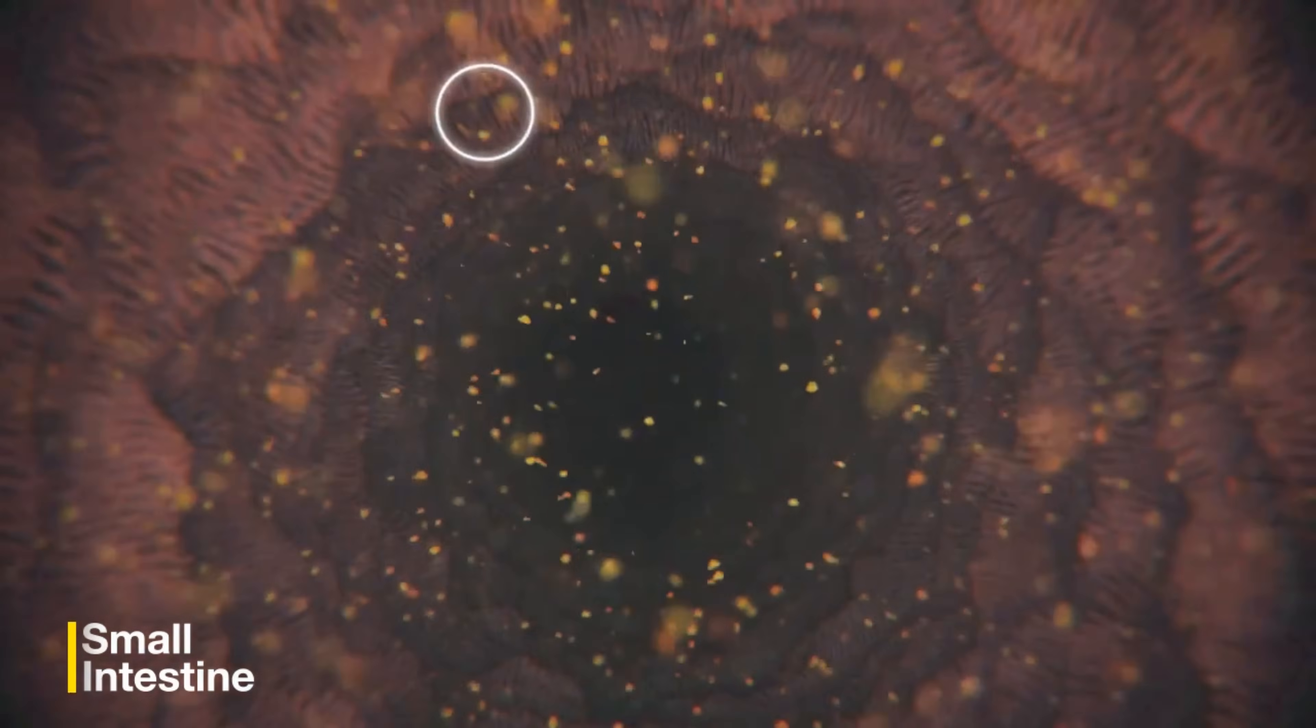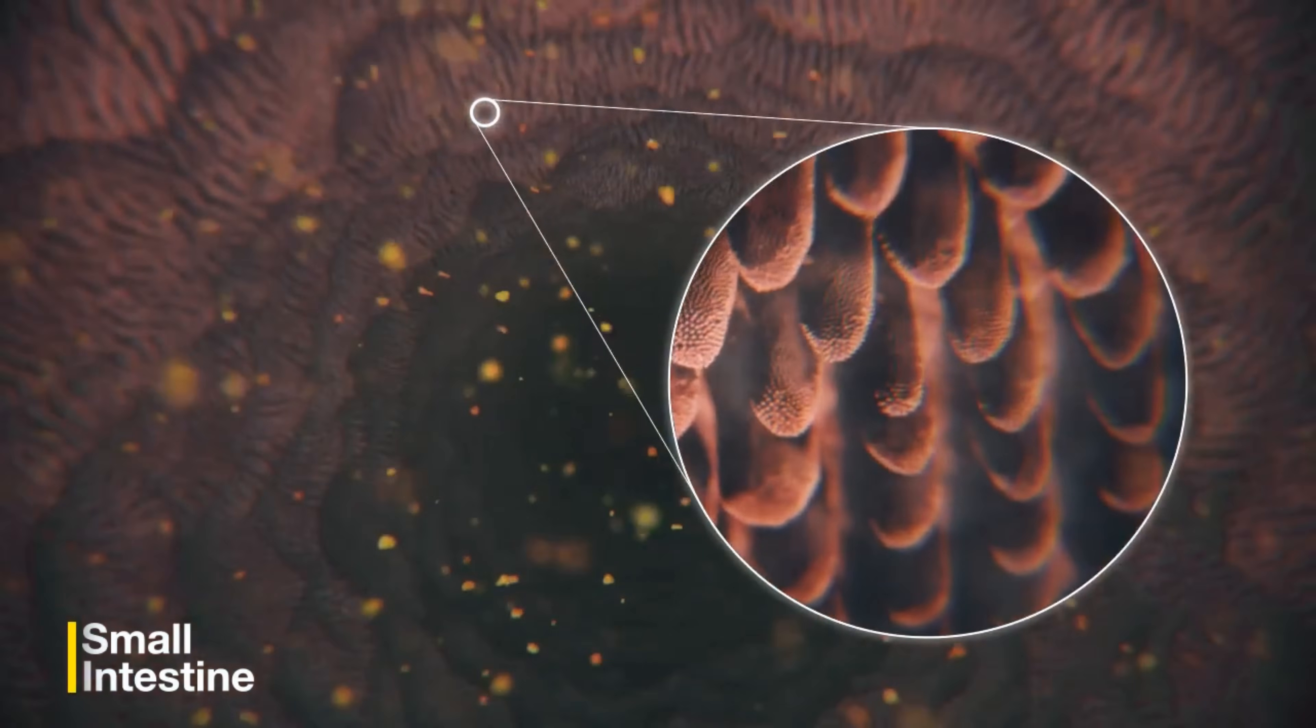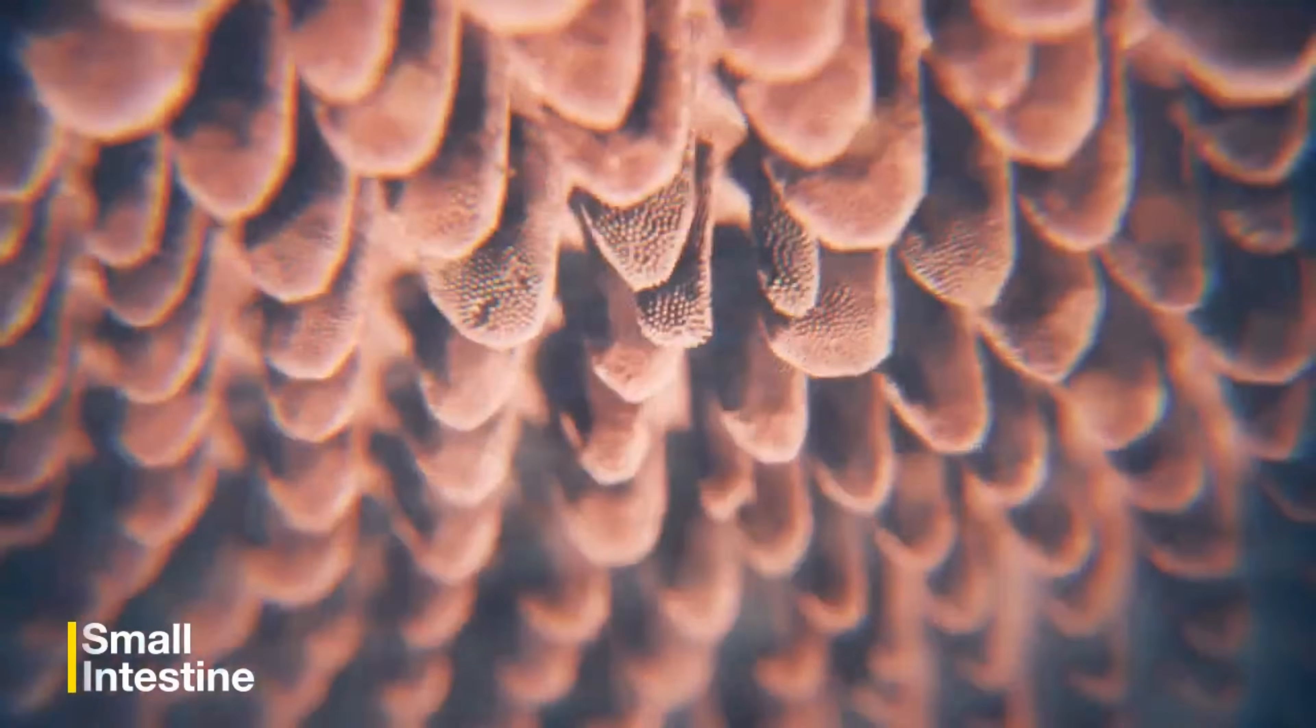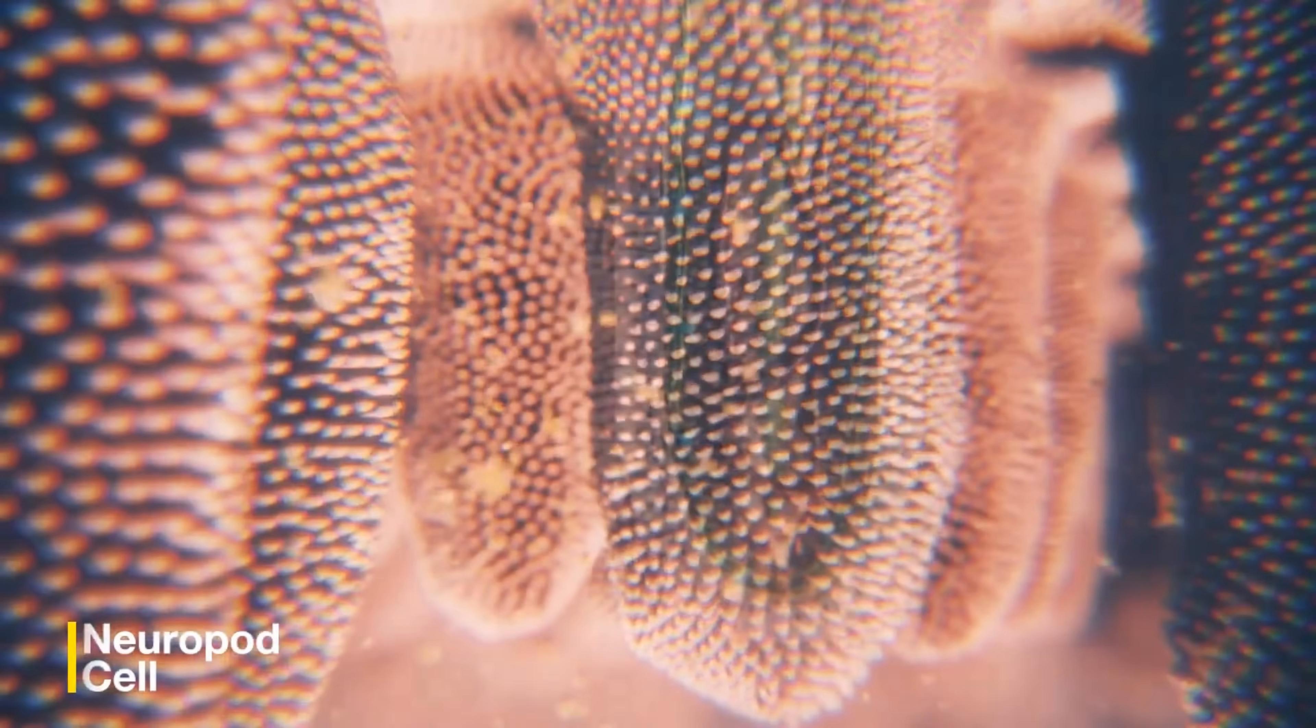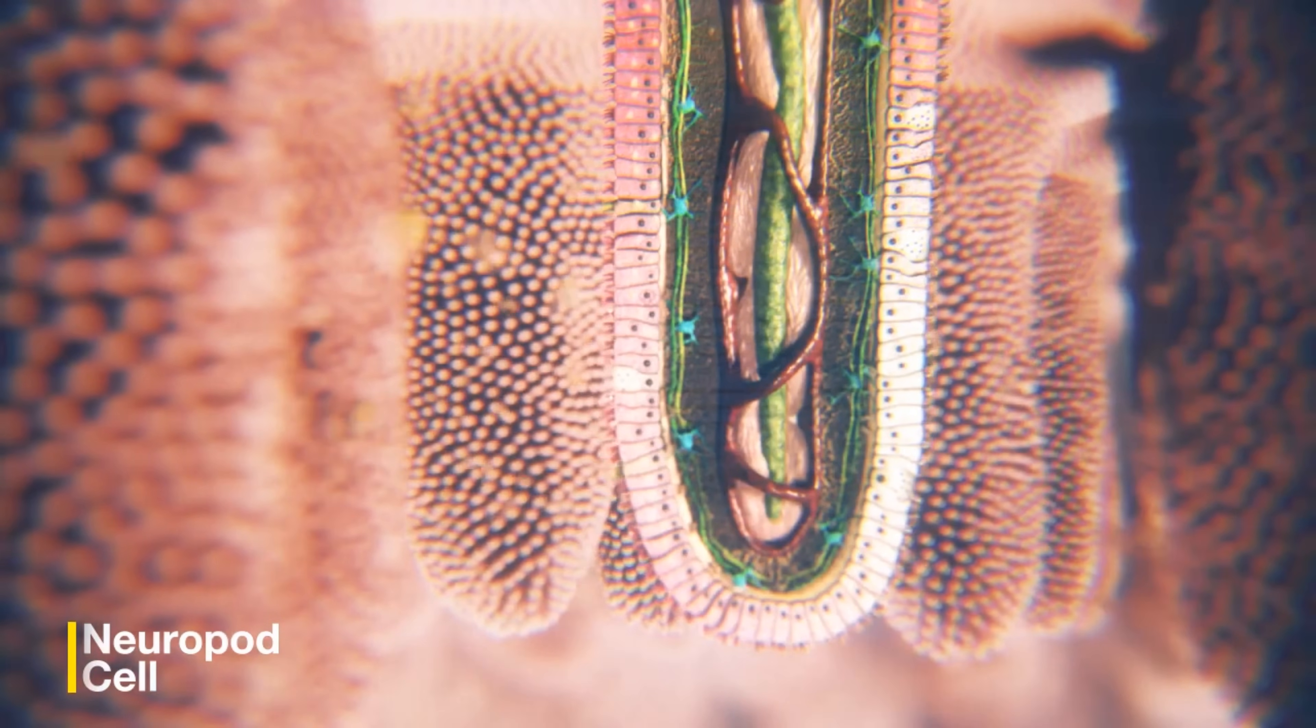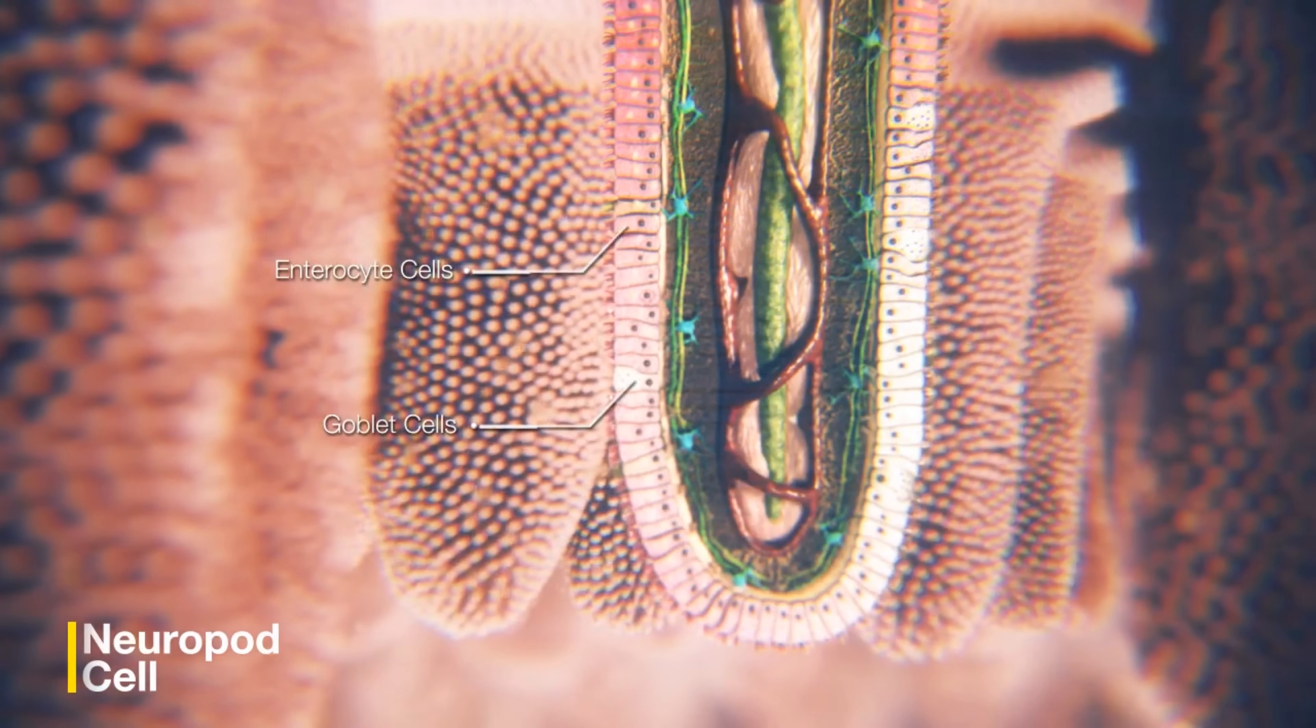Once eaten, digested food particles enter the small intestine, which is covered with a velvety layer of villi. Each villus is lined with a single layer of epithelium. This layer is made up of different cell types.